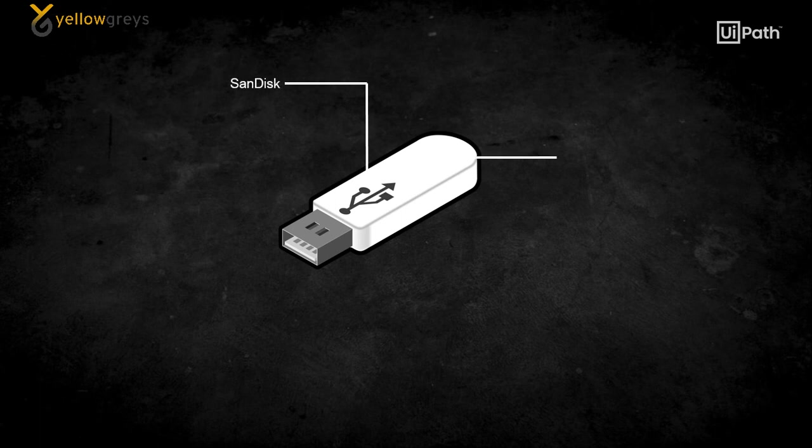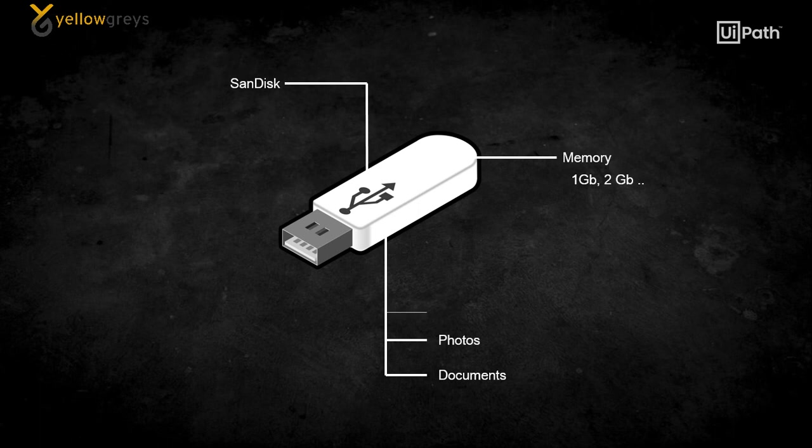Here pen drive name is SanDisk and you can describe the memory as 1GB, 2GB, and so on. And also you can store different types of data including documents, photos, MP3 files, and other types of data.